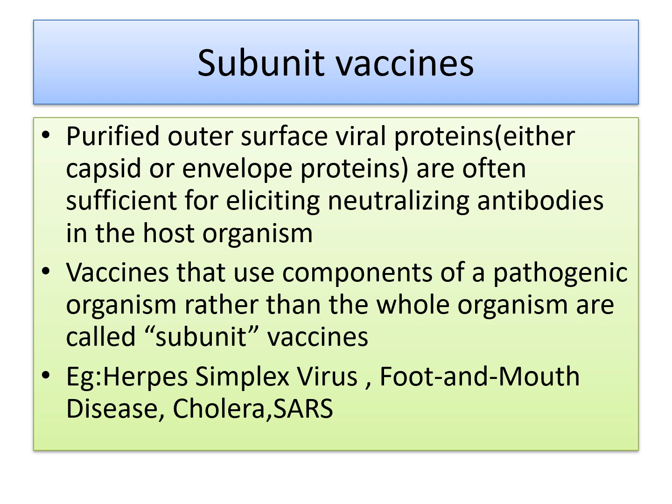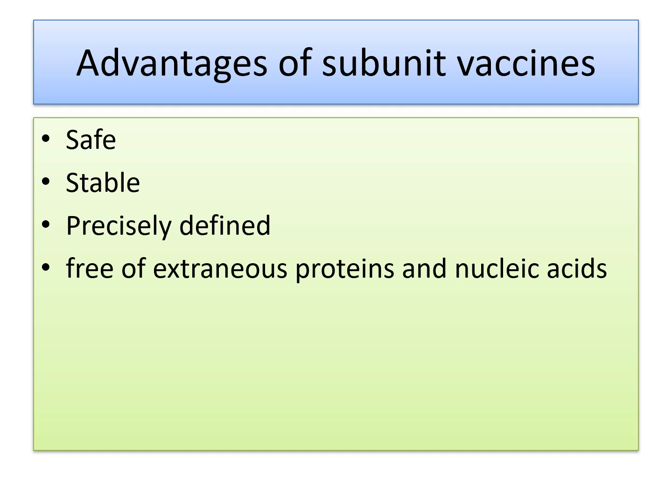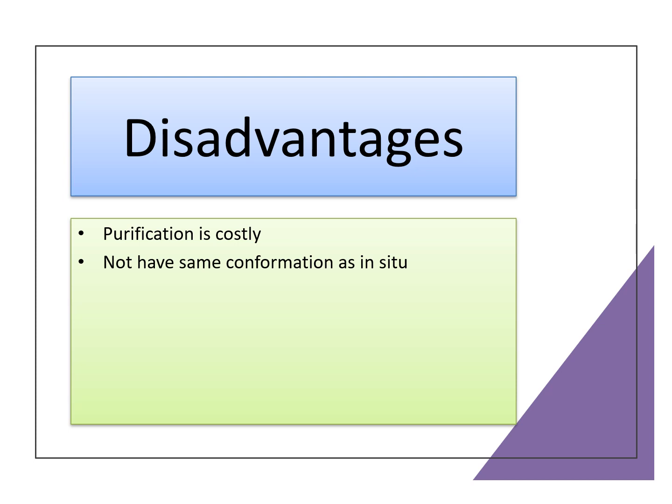For subunit vaccines, purified outer surface viral proteins are taken because they are sufficient for eliciting an immune response in the host. Vaccines that use components of the pathogenic organism rather than the whole organism are called subunit vaccines — just some subunits that can elicit an immune response. Examples include herpes simplex virus, foot and mouth disease, cholera, and SARS. These subunit vaccines are very safe, stable, and precisely defined — free from extraneous proteins and nucleic acid. The limitation is that purification is a very costly process and may not have the same conformation as in-situ.